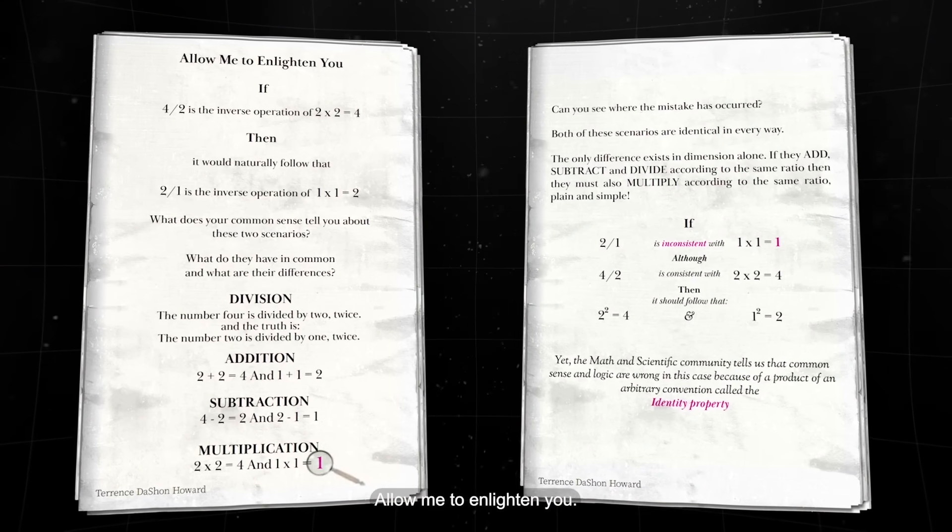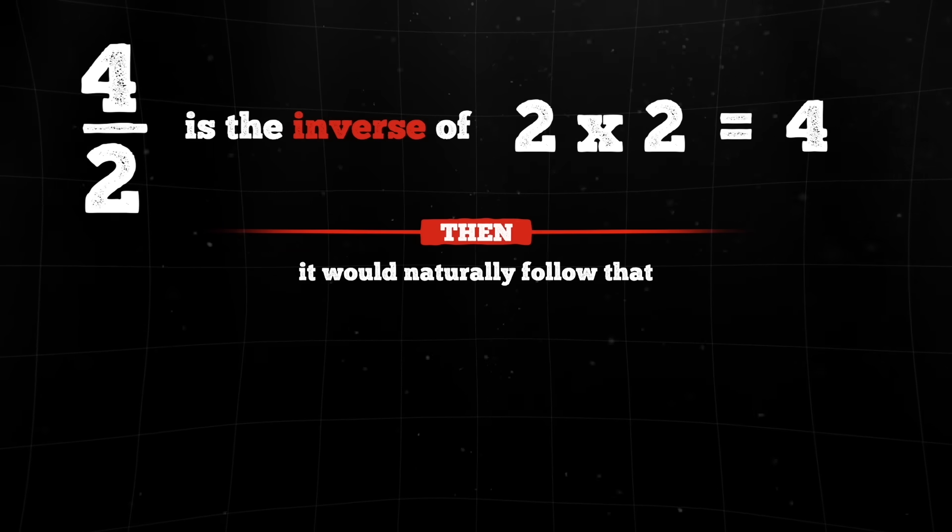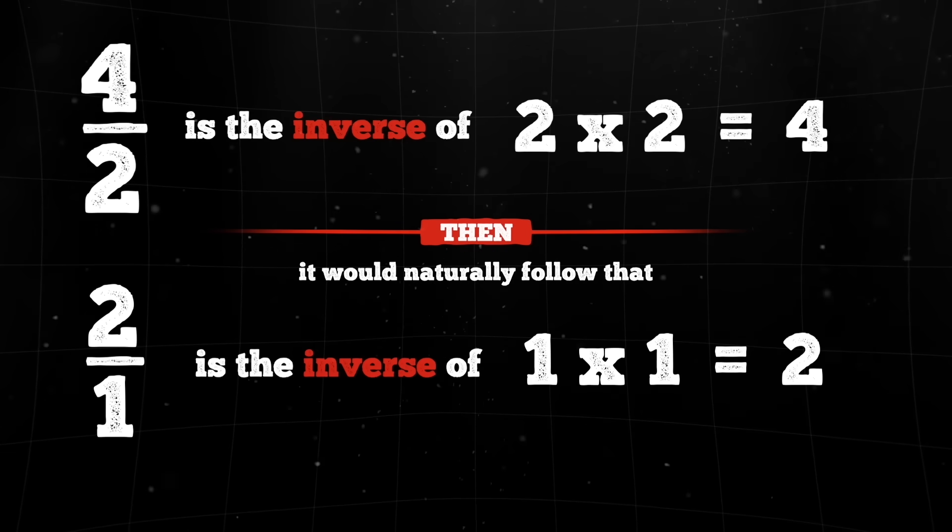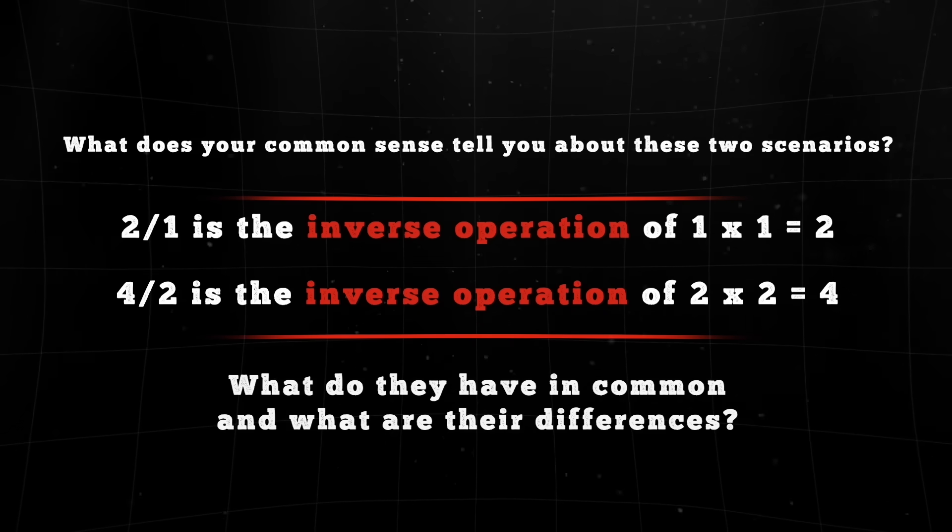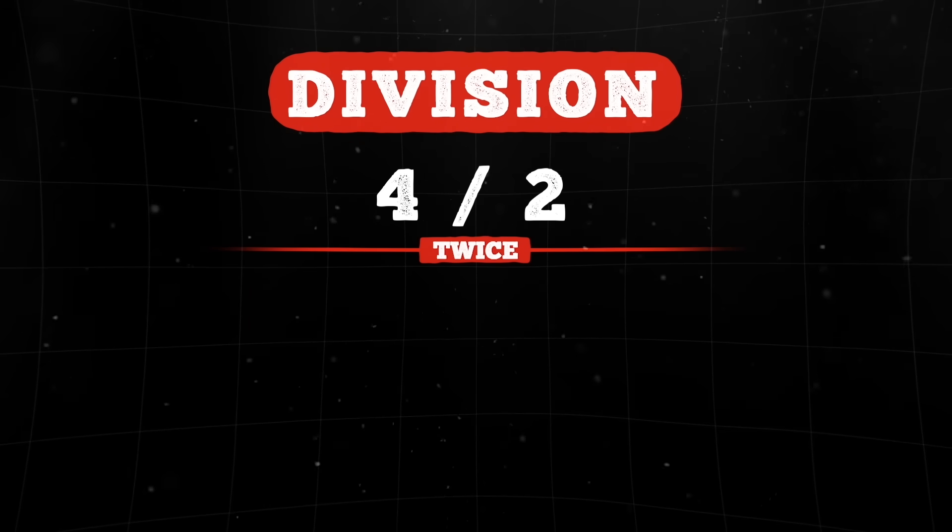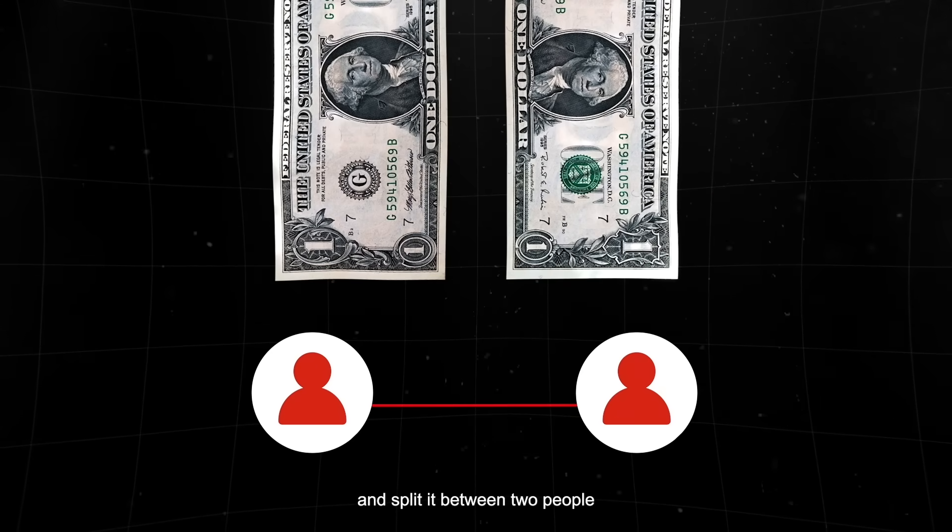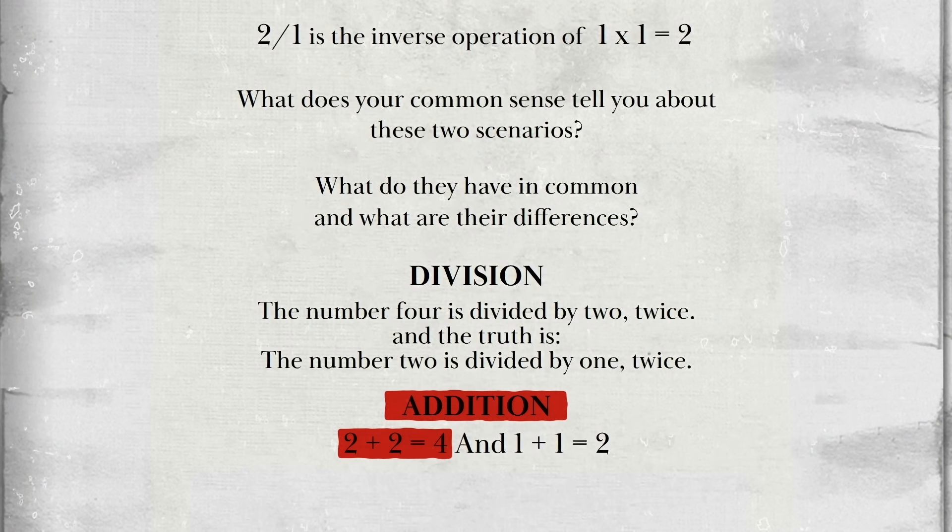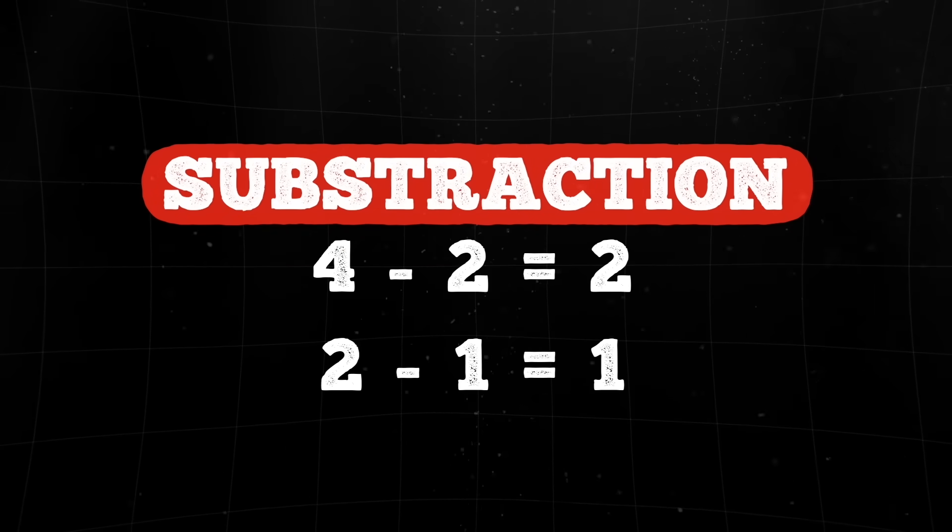Allow me to enlighten you. If four over two is the inverse operation of two times two equaling four, then it would naturally follow that two divided by one is the inverse operation of one times one equaling two. What do they have in common and what are their differences? Division. The number four is divided by two twice. And the truth is the number two is divided by one twice. The proof of that, if you had two dollars and split it between two people, you would have to give each person one dollar. In addition, two plus two equals four and one plus one equals two.